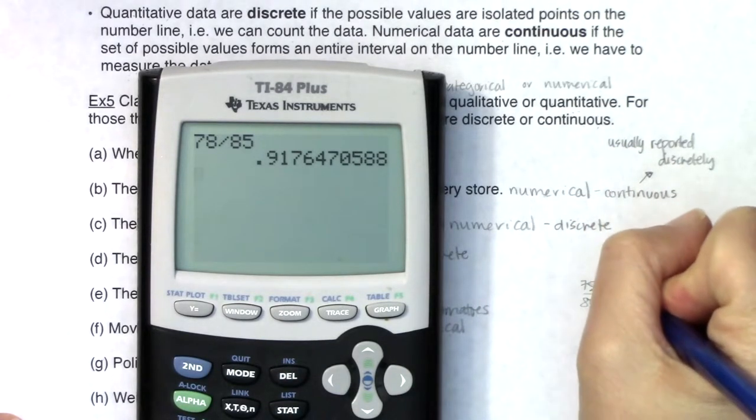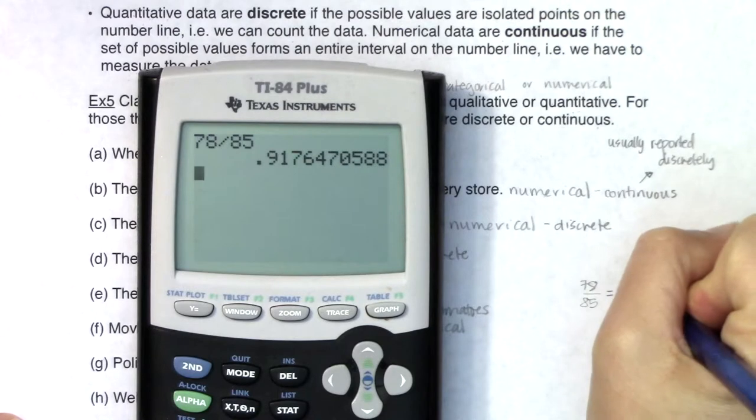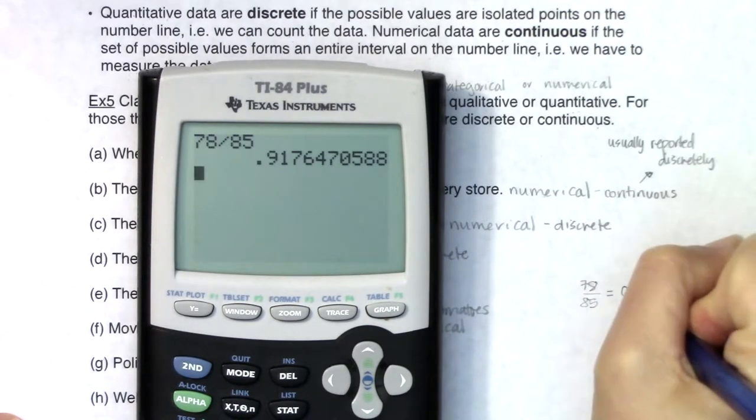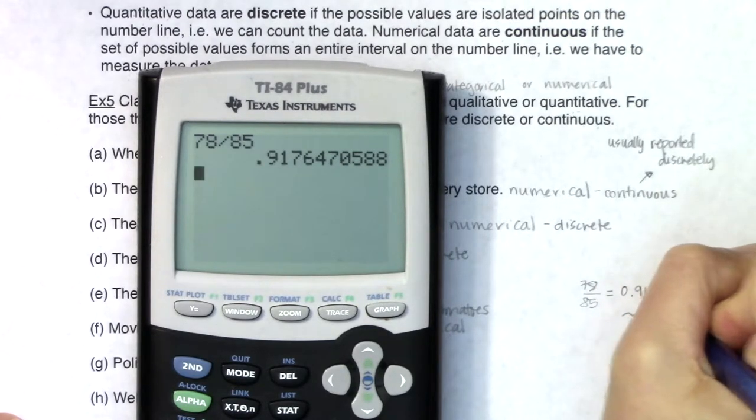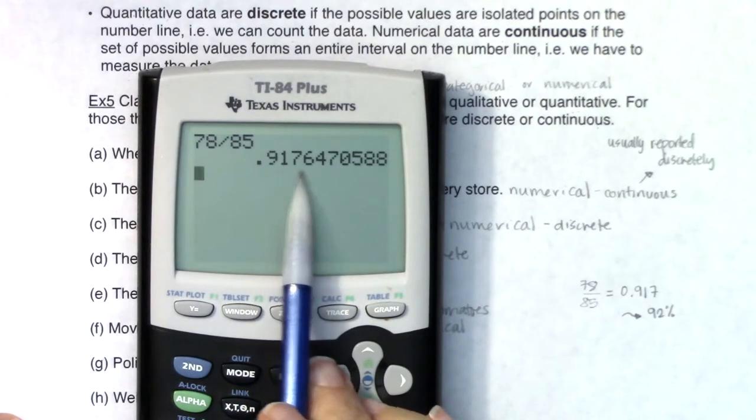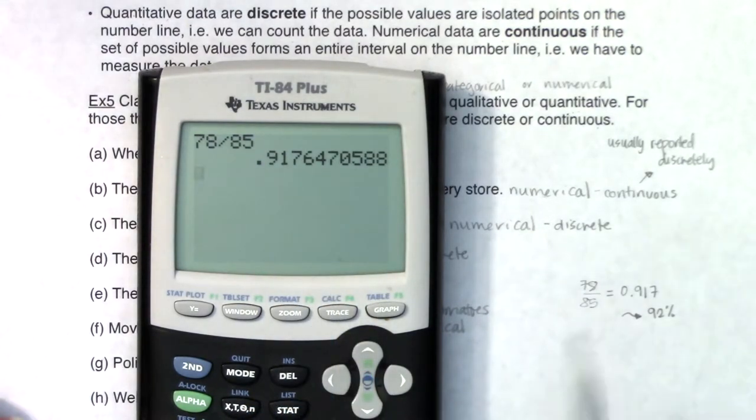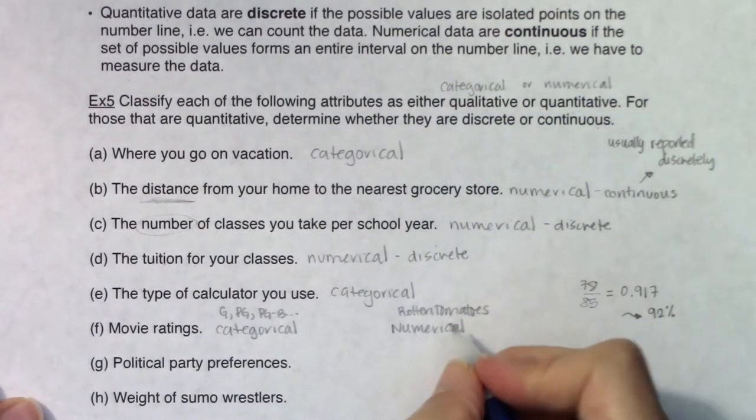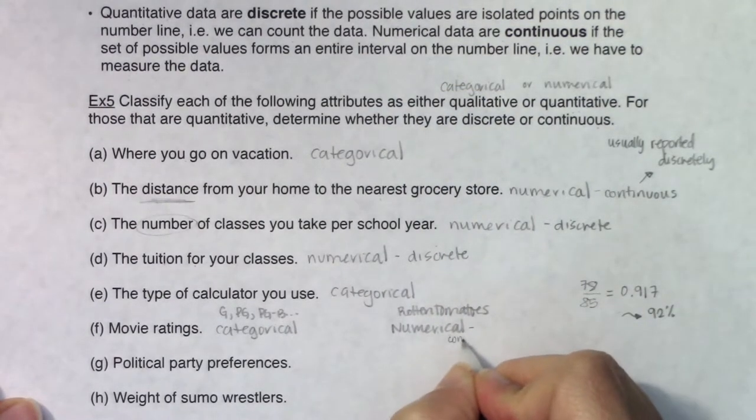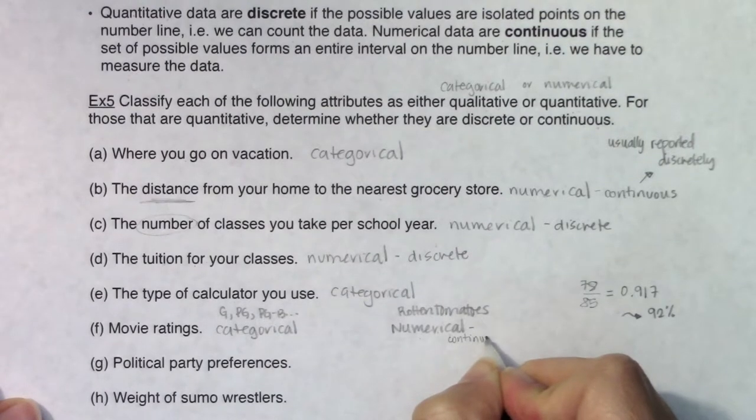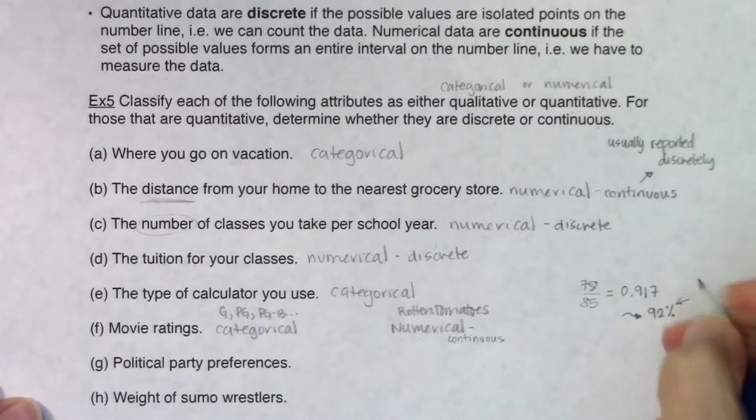I want to point this out - on rotten tomatoes you would see 92 percent and you can see this decimal here, it keeps on going. It can be any number. So technically we're back again to this would be numerical continuous. Anytime you've got fractions you're looking at continuous.